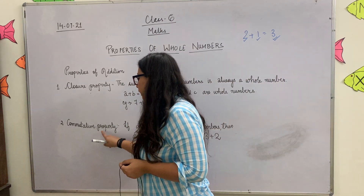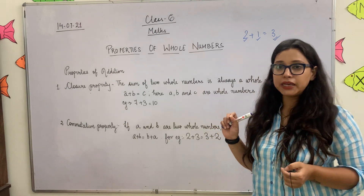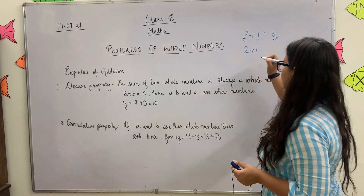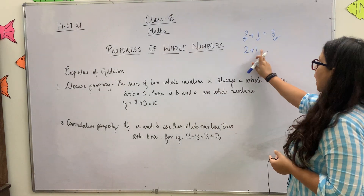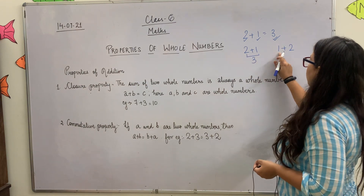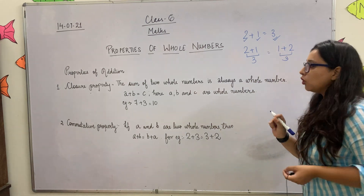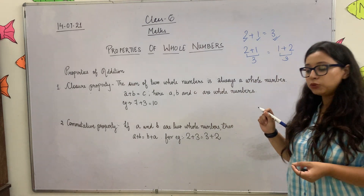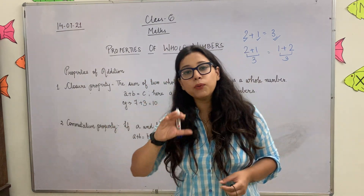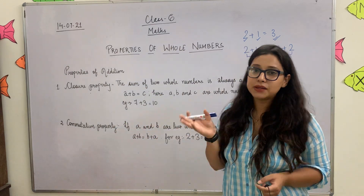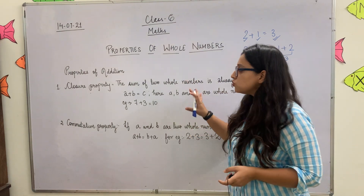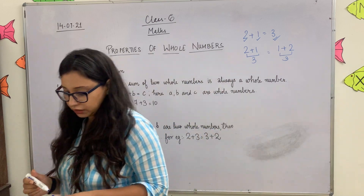Commutative property says that if you add two whole numbers, whether you write 2 plus 1 or 1 plus 2 — the answer is the same. 2 plus 1 is 3, and 1 plus 2 is also 3. So in commutative property, whether you write A plus B or B plus A, the answer is the same whole number. These are the two properties: closure property and commutative property.